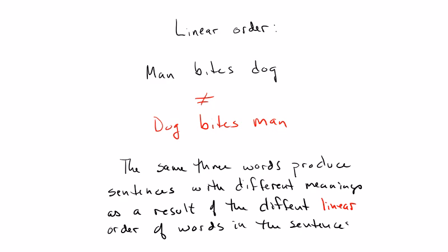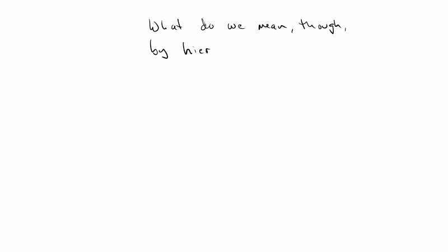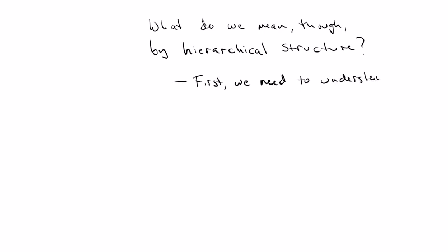That's the easier concept. The next thing we want to turn to is hierarchical structure. In order to really understand hierarchical structure, we first need to think about constituency. We want to think of sentences as more than a linear string of words — we want to think of sentences as comprised of one or more words that can be grouped into larger units that function as single units within the sentence. The best way to understand this is in terms of what we call constituent structure.